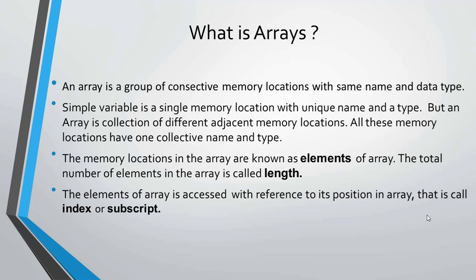First question: What is an array? An array is a group of consecutive memory locations with the same name and data type. Simple variables are a single memory location with a unique name and data type. But an array is a collection of different adjacent memory locations. All these memory locations have one collective name and type. The memory locations in the array are known as elements of the array. The total number of elements in an array is called its size. The elements of the array are accessed with reference to their position, which is called the index or subscript.